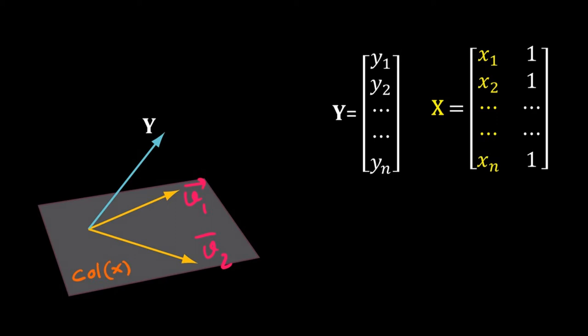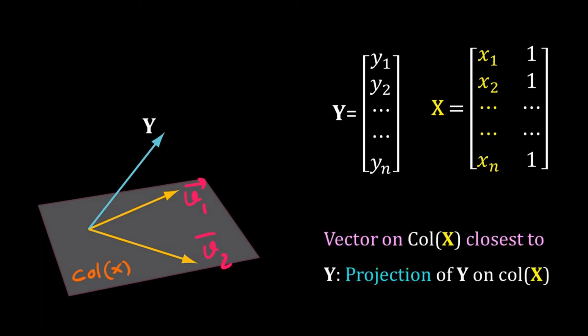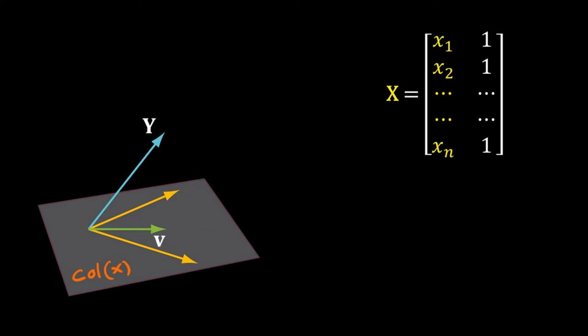But this does not help. Our task is to find a best fit linear equation for this data. That means we have to find a vector that is on the column space of X but also closest to the Y vector. The closest vector of Y on the column space of X is the projection of Y on that space. I have shown that projection by the green arrow, that vector v.